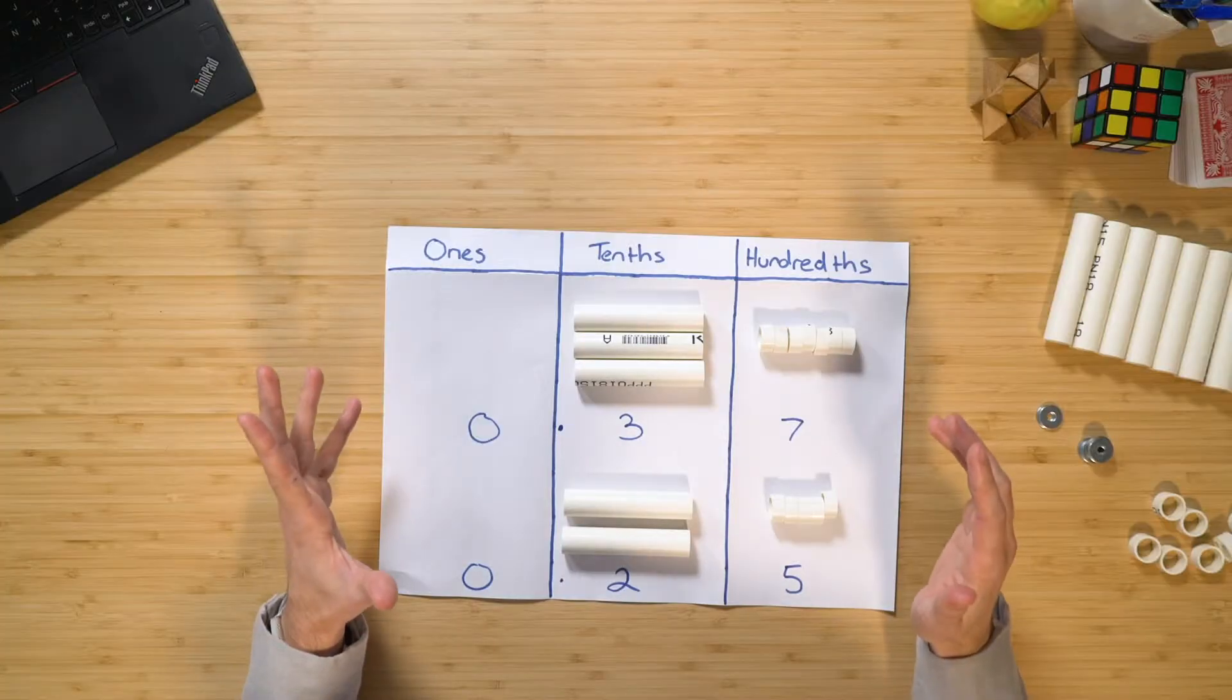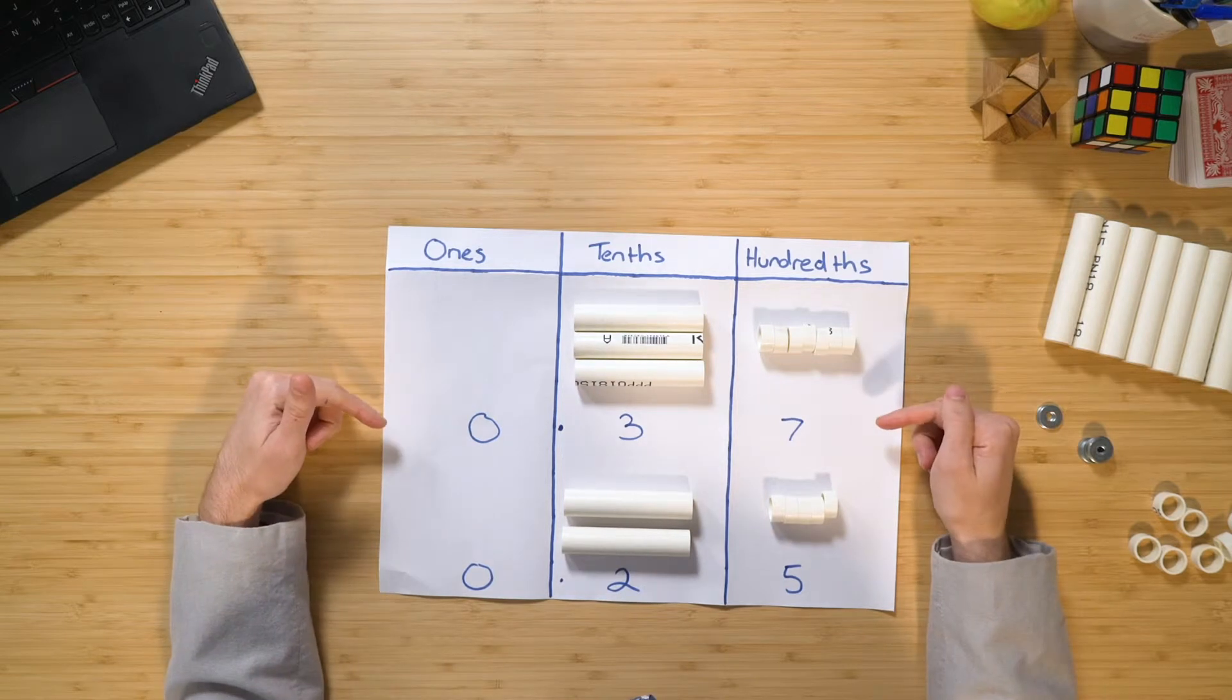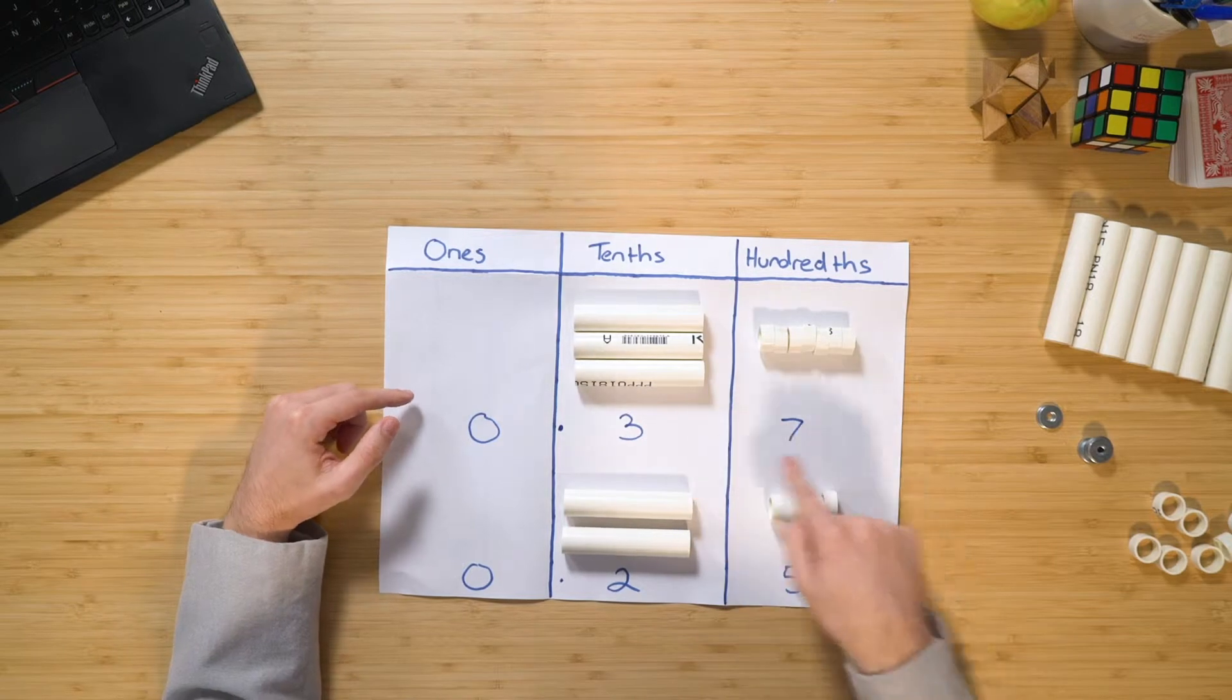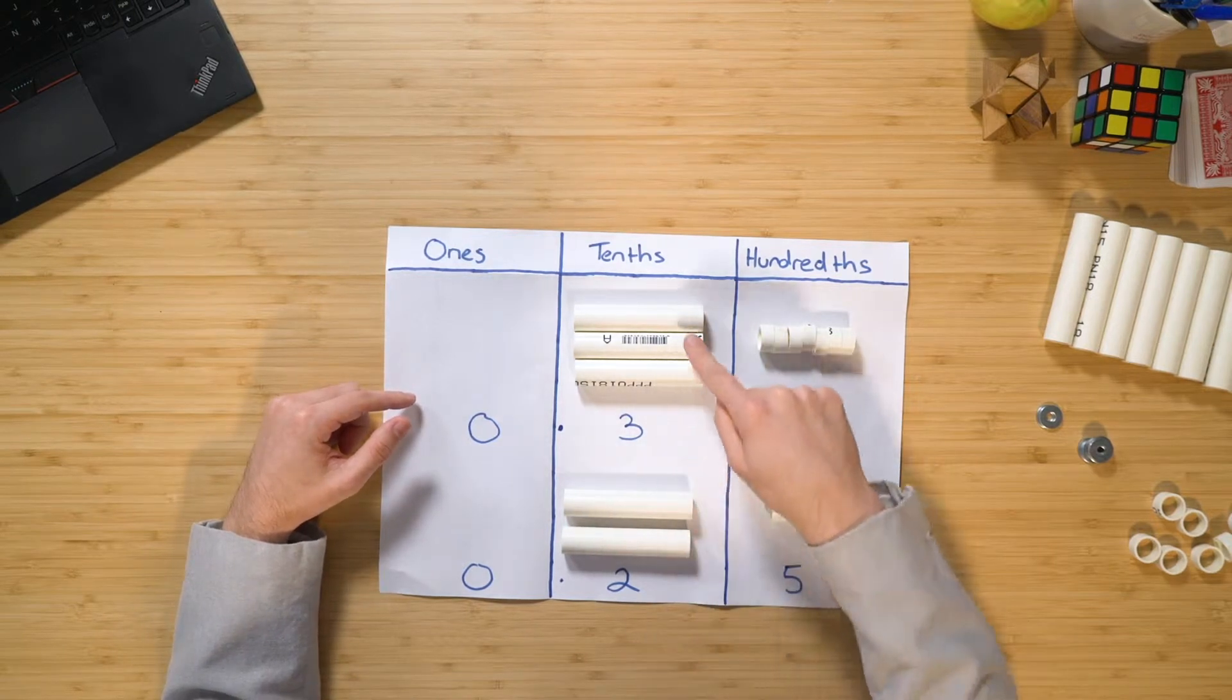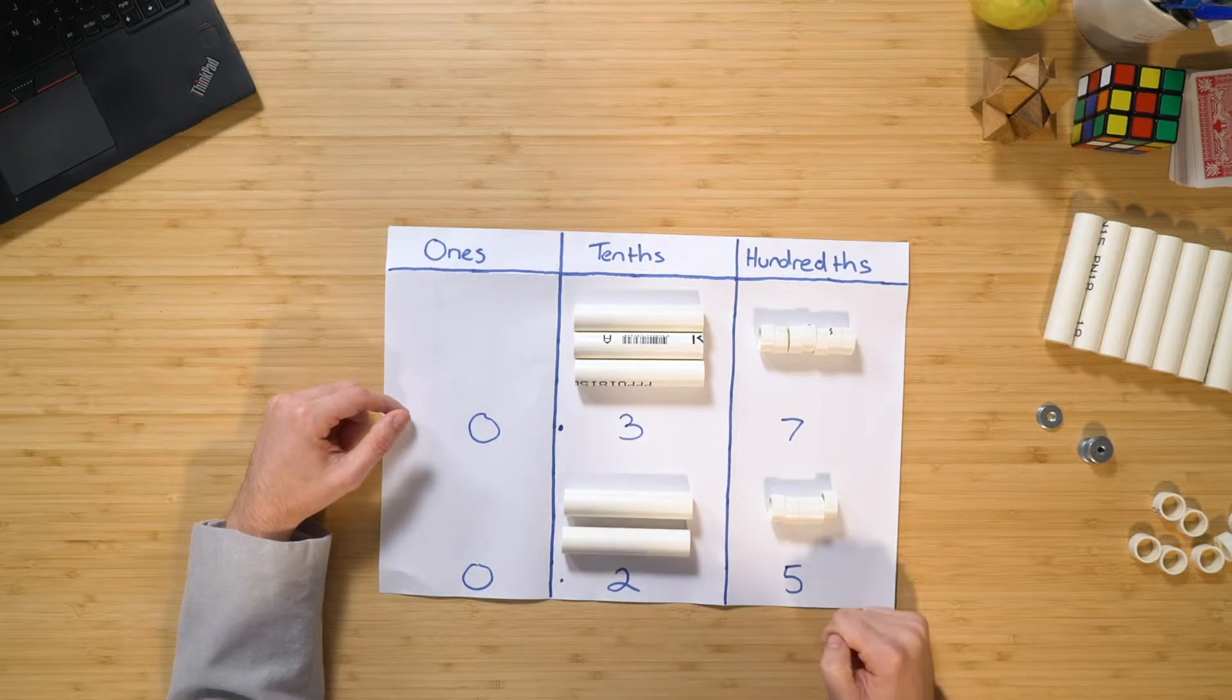So in this example, we're going to have a look at how to add 37 hundredths to 25 hundredths. Now, if I have a look at what I've done here with my place value chart and also my materials, well, I've got 37 hundredths or I could read that as being three tenths and seven hundredths and add two tenths and five hundredths.